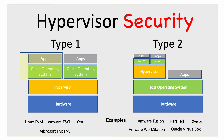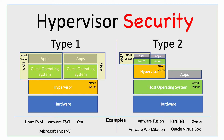The virtual machine is the combination of the guest operating system and the app running directly on top of the hypervisor, and we see that in both Type 1 and Type 2 models. In terms of attack vectors, in Type 2 an attacker could target the host operating system. In Type 1, attack vectors are associated with the hypervisor directly on top of the hardware. There are also attack vectors at the virtual machine level in both models.